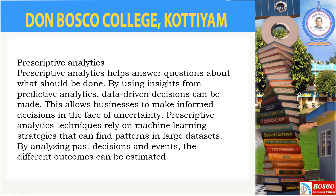The fourth type is prescriptive analytics. To recap: the first type found what happened, the second type found why things happened, the third type predicted what will happen, and in the fourth type we find the answer to 'what should be done?' By using insights from predictive analytics, we can make decisions that help organizations face uncertainty.